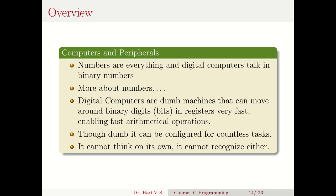Now we come to an overview of computing. In computing, numbers are everything — digital computers talk in binary numbers, in terms of binary zeros and ones. Digital computers are actually dumb machines that can move bits within registers very fast, enabling fast arithmetical operations. They are called dumb because they cannot think on their own — even a three-year-old child can recognize an apple from an orange or a cat from a dog, but a computer cannot recognize an image of a dog on its own.